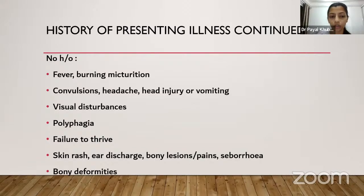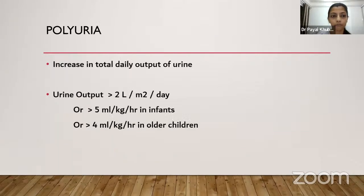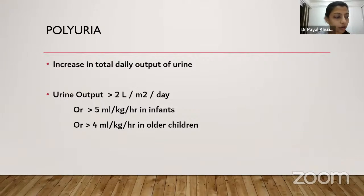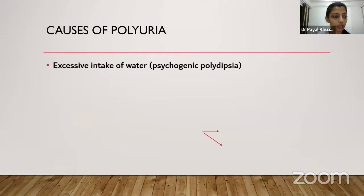No history of fever, burning micturition, convulsions, headache, head injury, vomiting, visual disturbances, polyphagia, failure to thrive, skin rashes, ear discharge, bony lesions, or bony deformities. Polyuria is defined as increase in total daily urine output greater than two liters per meter squared per day, or more than 150 ml/kg/day in a newborn, 100-110 ml/kg/day up to two years, more than 5 ml/kg/hour in infants, or more than 4 ml/kg/hour in older children.